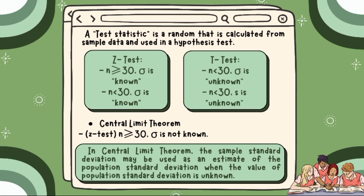On the other hand, a t-test is used when the population variance or standard deviation is not known and the sample size is less than 30. Also if the sample size is less than 30 and the sample standard deviation is known.